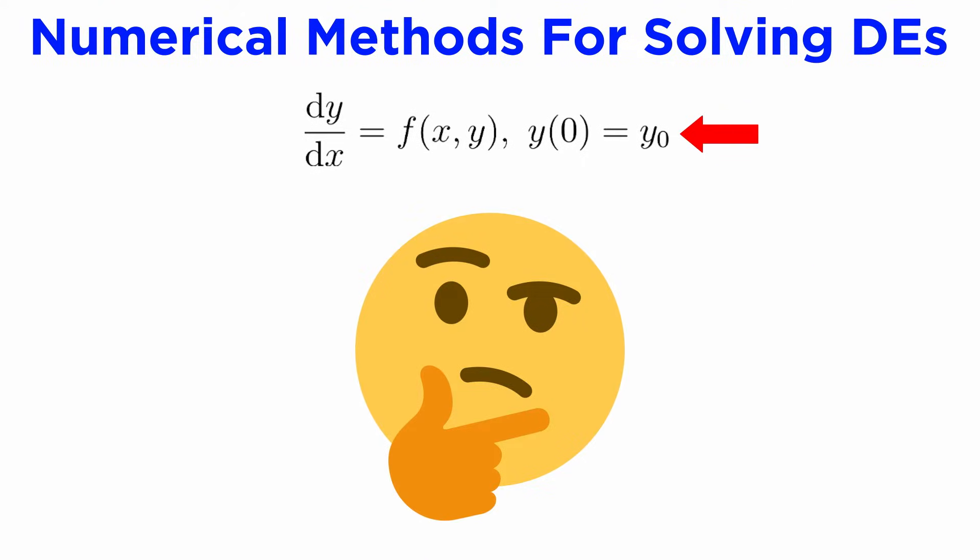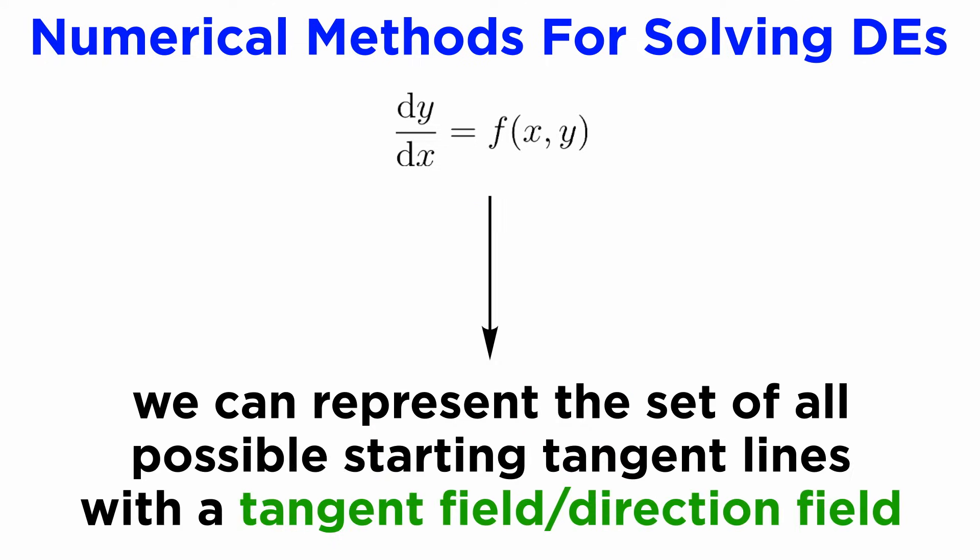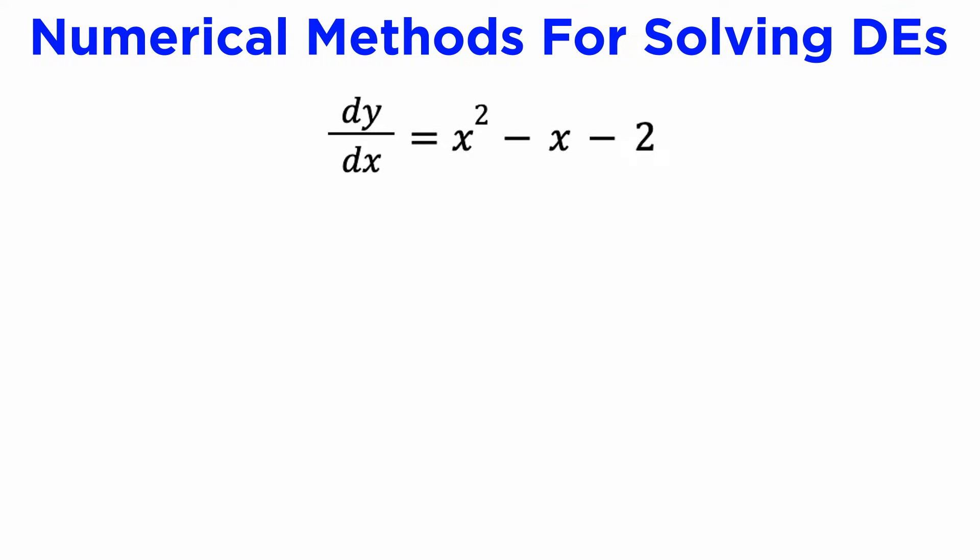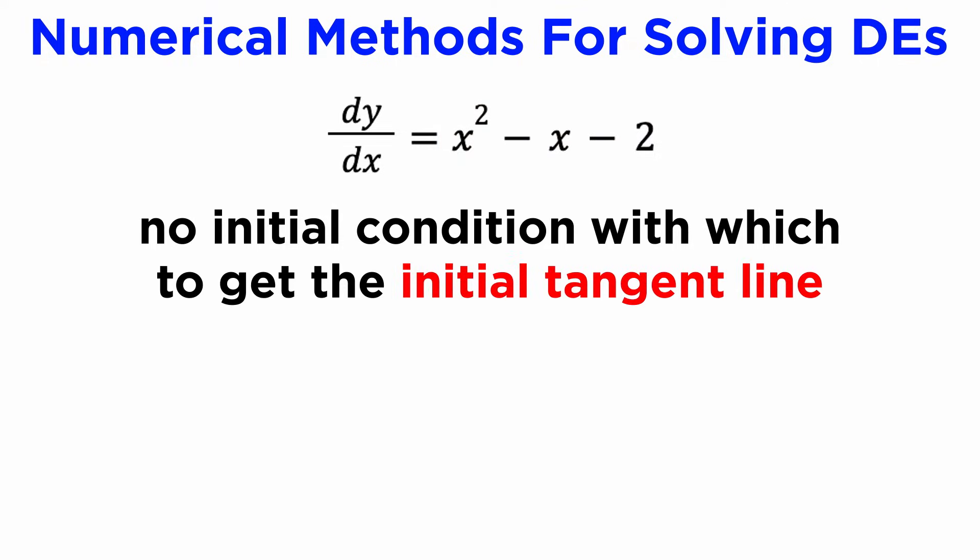What if we weren't given an initial condition? In that case, we wouldn't have a fixed starting point, but we can still make some progress. We can represent the set of all possible starting tangent lines using a tangent field, sometimes known as a direction field. In this example, we have the differential equation dy/dx = x² - x - 2, so our function f(x,y) is x² - x - 2.